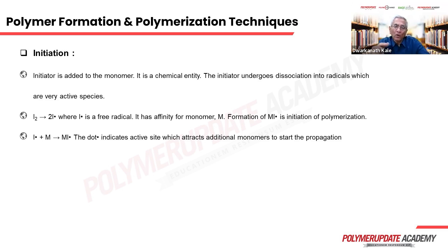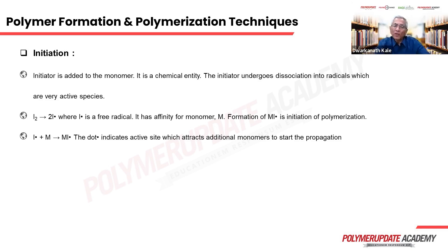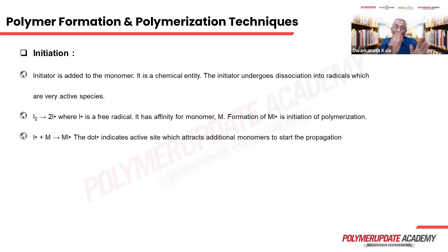The dot represents a free radical, meaning it has an affinity to accept a monomer. You can think of this like a relay race — I hold the hands of the next person and transfer the baton to them; that baton then becomes a free radical for the next monomer. So I· + M gives you MI·, meaning one monomer unit is now attached to the initiator.